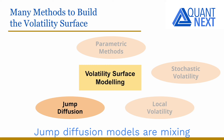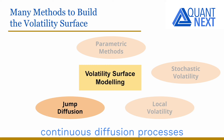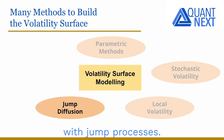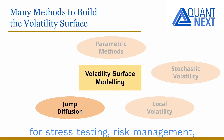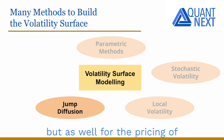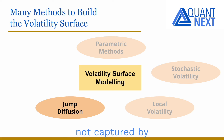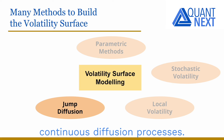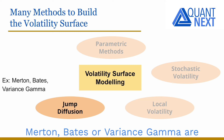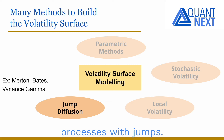Jump diffusion models mix continuous diffusion processes with jump processes. They are useful for stress testing, risk management, but also for the pricing of some options such as short-term or very out-of-the-money ones, adding some extreme risks not captured by continuous diffusion processes. Merton, Bates, or Variance Gamma are some examples of processes with jumps.